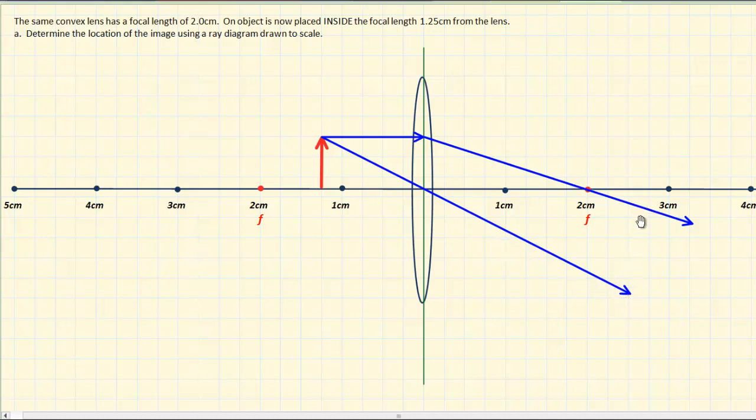Now it's up to the two refracted rays, the ones on the right, to cross or converge to locate our image. And clearly, because we're inside this focal point, these two rays will never converge. They're diverging rays.